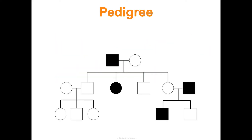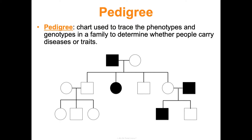Now let's talk about pedigrees. A pedigree is a chart used to trace the phenotypes and genotypes in a family to determine whether people carry certain traits or diseases. Genetic counselors use them to determine the probability of passing a disease to offspring, and they help us identify inheritance patterns — whether a trait is dominant, recessive, sex-linked, or autosomal.